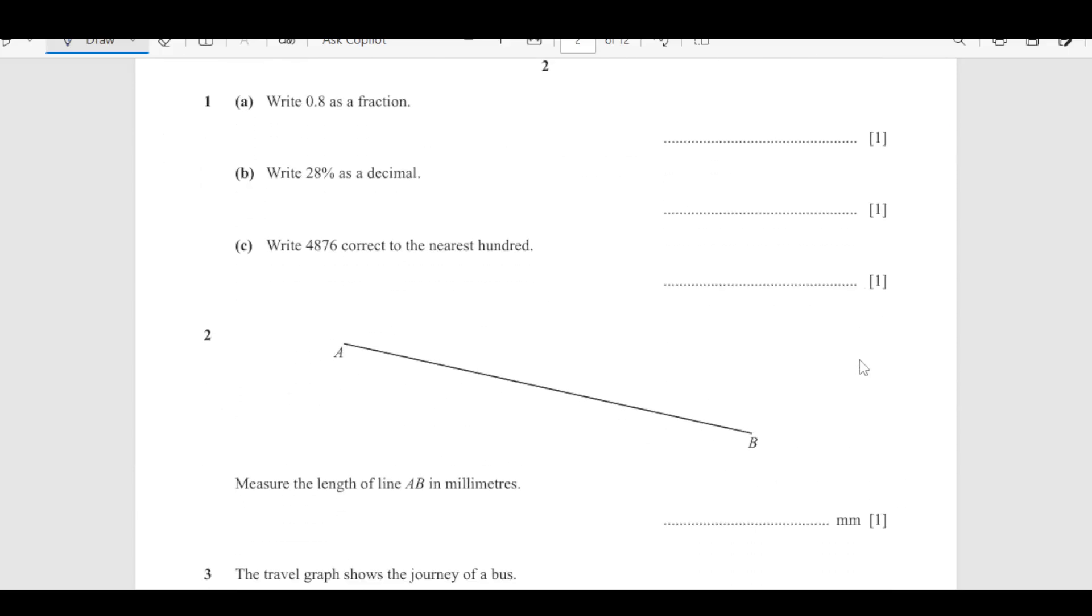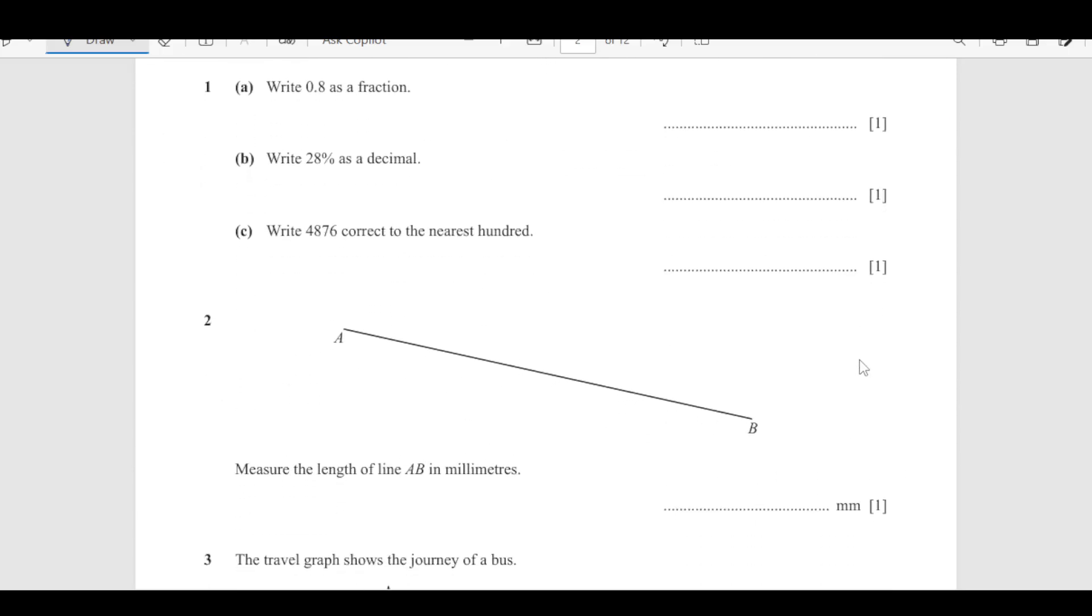Let us start. Number 1: write 0.8 as a fraction. 0.8 can be written as 8 over 10. You can either write 8 over 10 and simplify this by dividing both numerator and denominator by 2, so it will be 4 over 5. Final answer is 4 over 5.